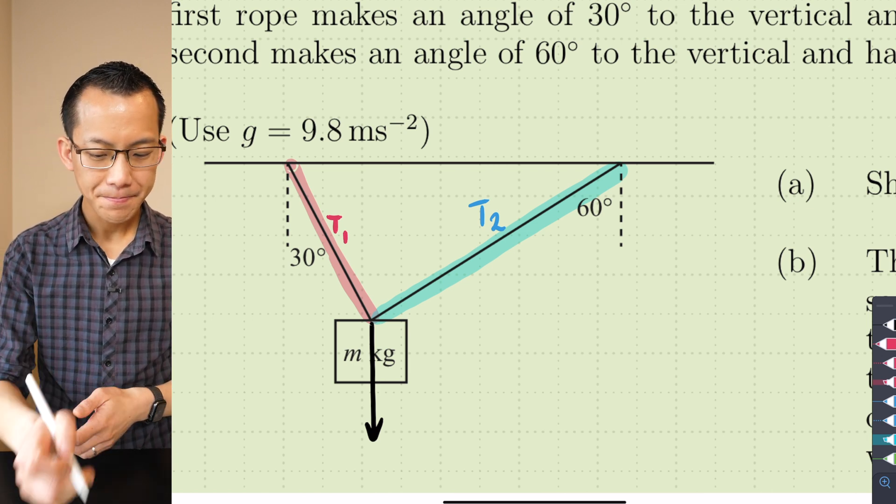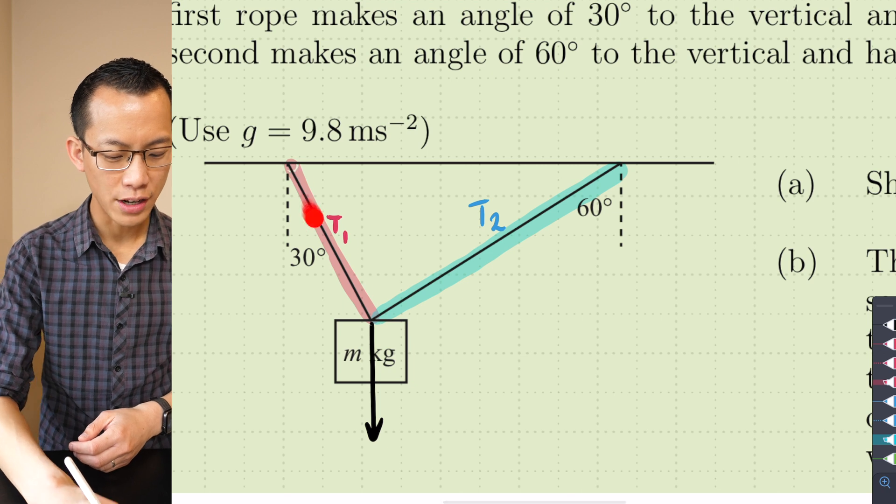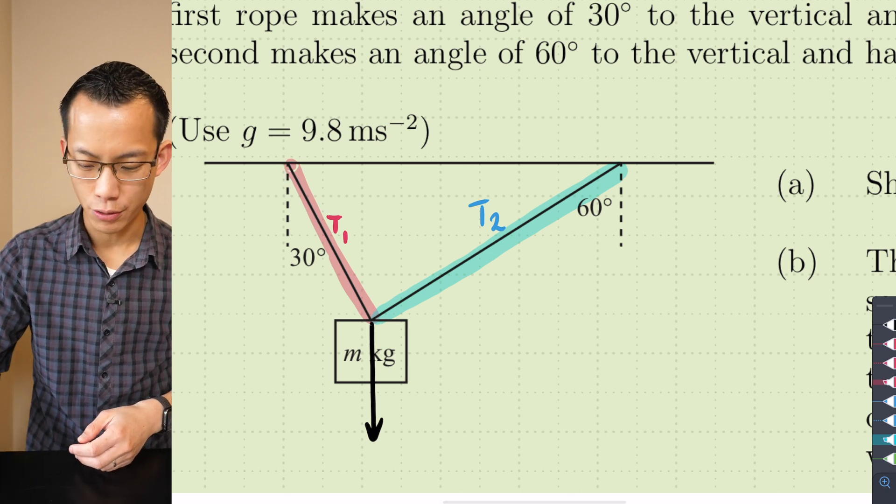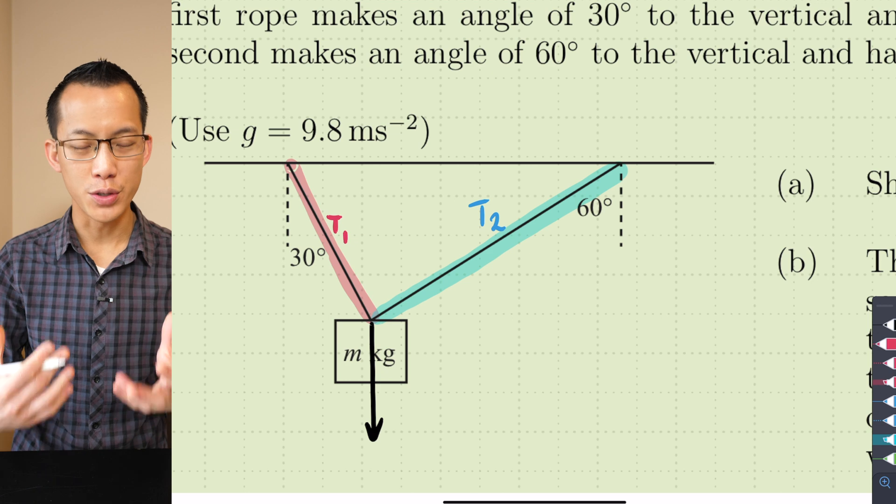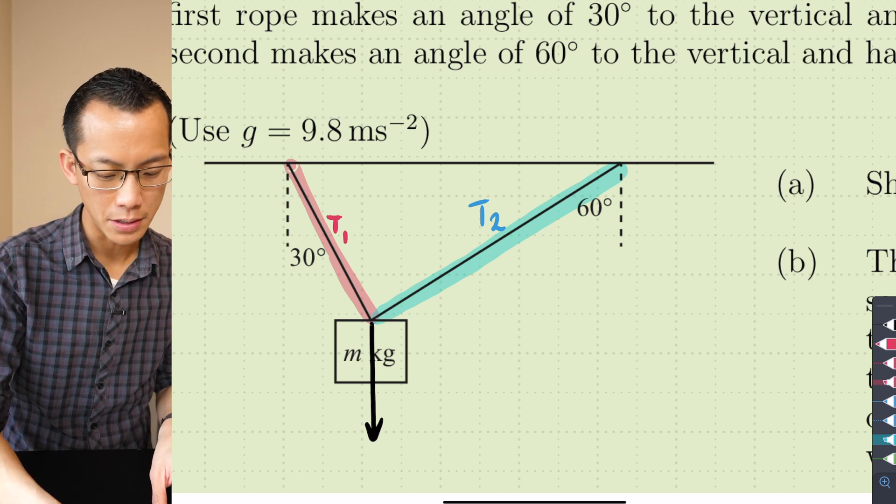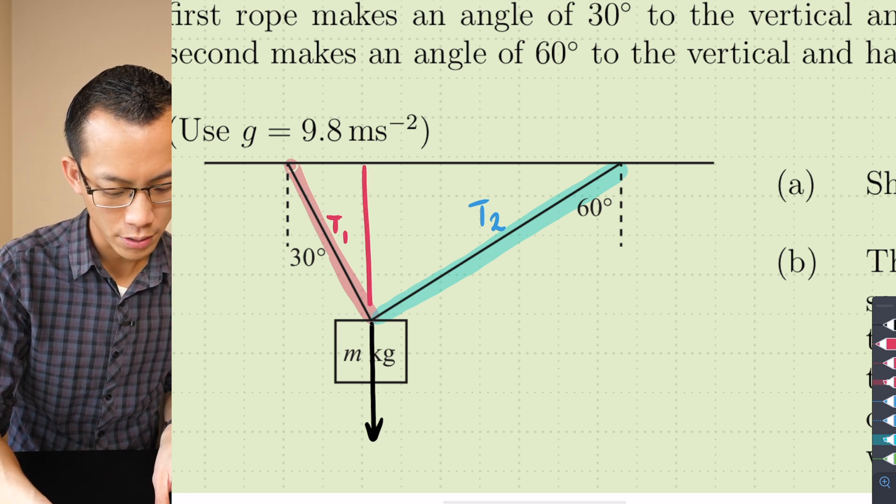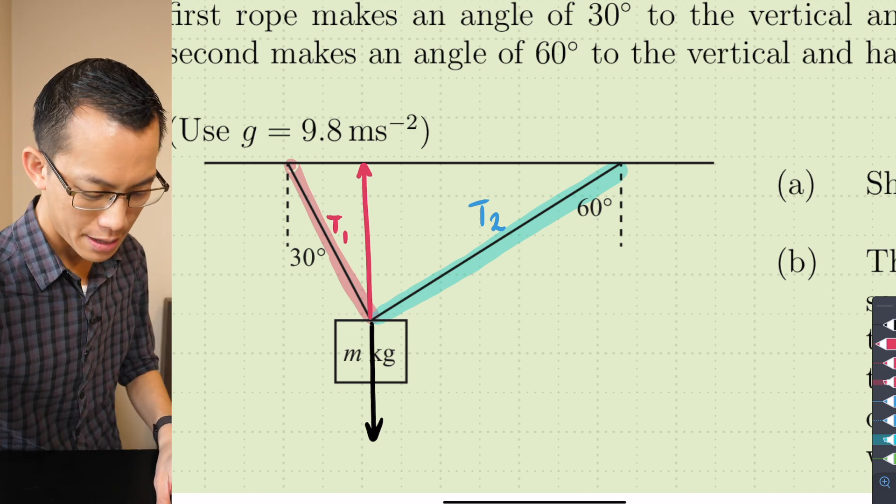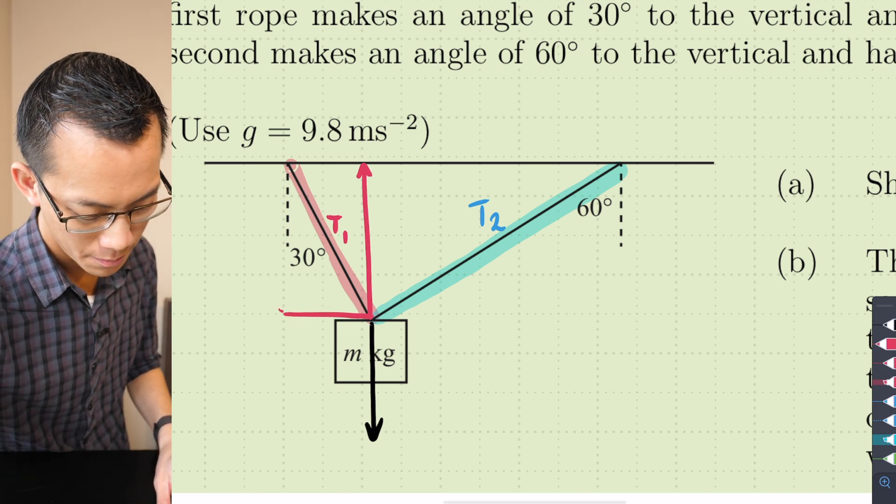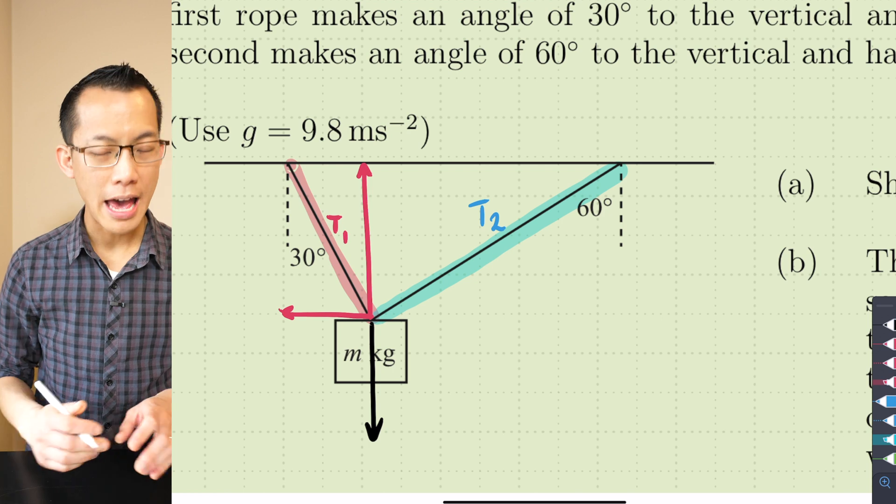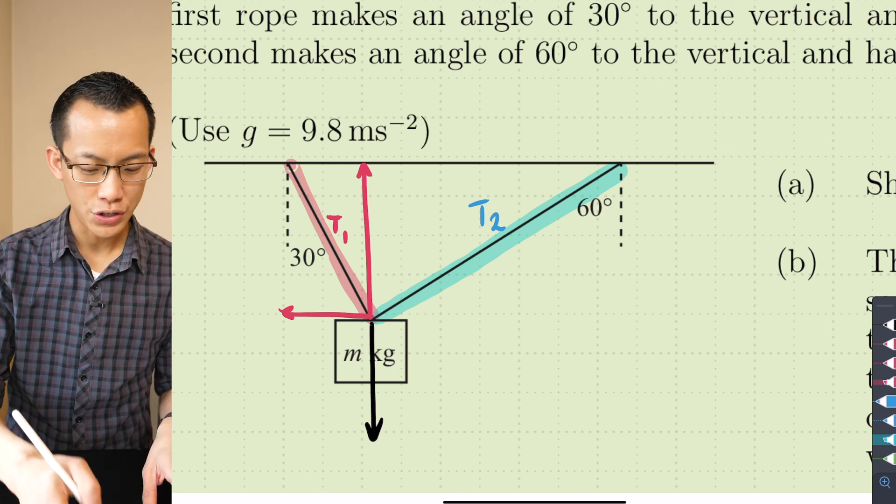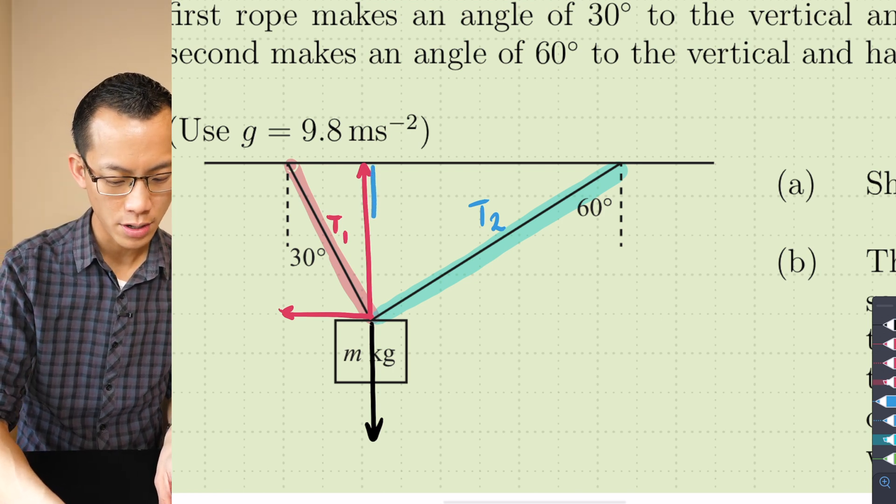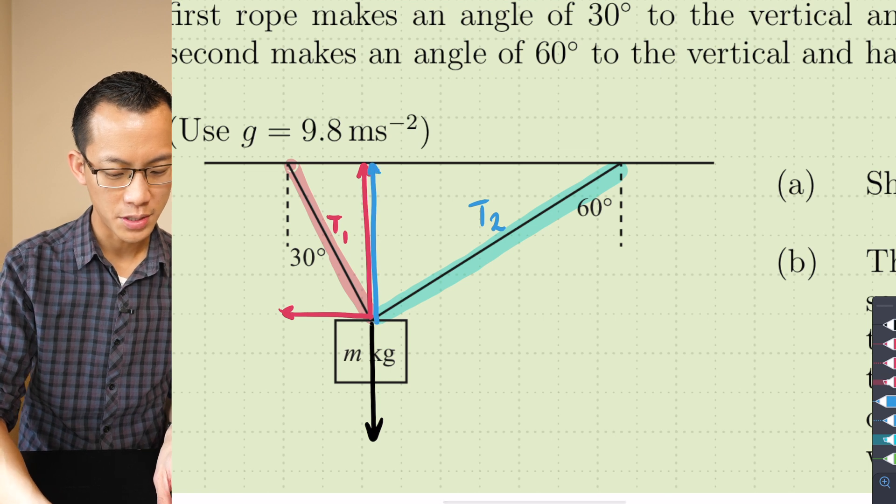There's a lot to take in there, let me see if I can put some things onto the diagram that's going to help us make sense of it. This T1 which is heading off at 30 degrees to the vertical, I'm going to resolve its forces into two components. There's this vertical component like so and then this horizontal one like so, and the same thing happens for the second rope which has a tension of T2.